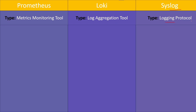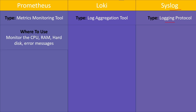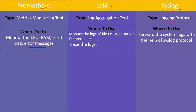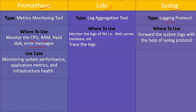You can use Prometheus where you want to monitor CPU, RAM, hard disk, or error messages. For Loki, use it for monitoring log files from web servers, databases, and tracing logs. If you want to monitor application logs use Loki; if you want to monitor resource utilization use Prometheus. Syslog forwards system logs with the help of the syslog protocol to a syslog server. Use cases for Prometheus include monitoring system performance, application metrics, and infrastructure health.